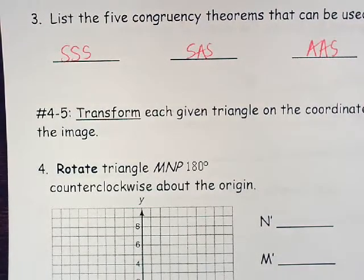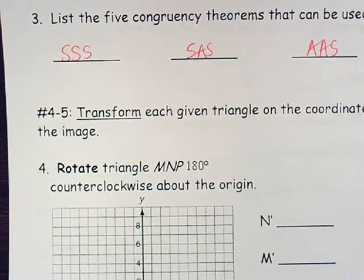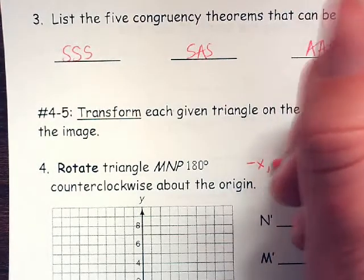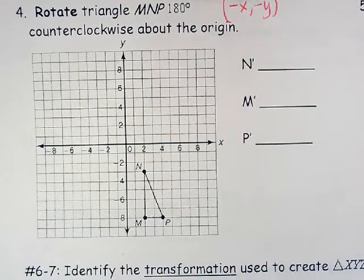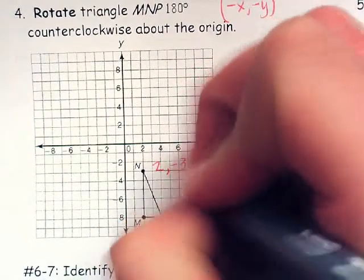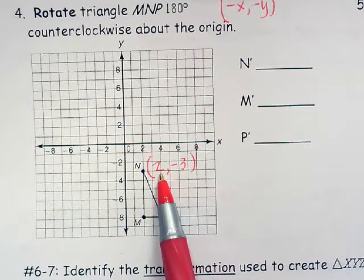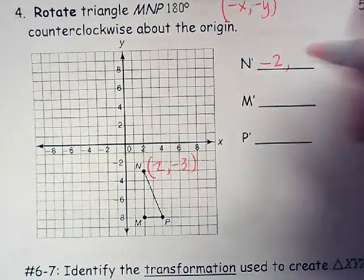Number 4 and 5: transform each given triangle on the coordinate plane as described and label the coordinates. We have to rotate triangle MNP 180 degrees counterclockwise about the origin. From your previous notes, that means I take X and Y and make them both negative but leave them in the same order — so negative X, negative Y. N is at 2, negative 3, so my new N prime changes the signs: negative 2, positive 3.